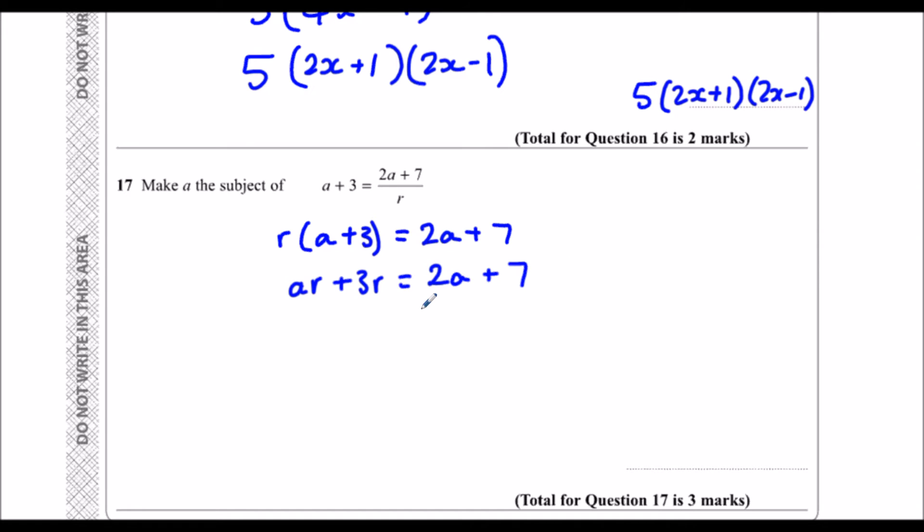So if I take 2a from both sides, I'll have ar minus 2a plus 3r equals 7.